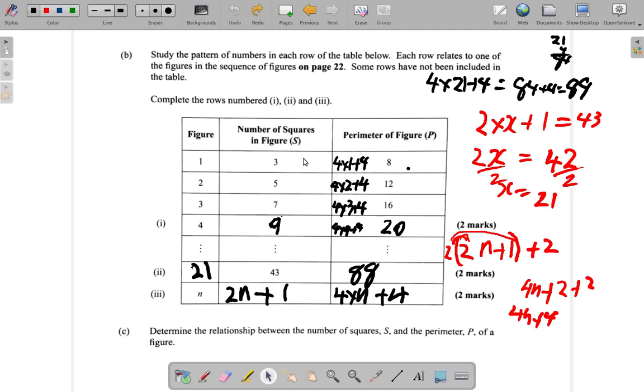Saying 2 times 3 is 6 plus 2 gives 8. 2 times 5 is 10 plus 2 gives 12. 2 times 7 is 14 plus 2 gives 16. 2 times 9 is 18 plus 2 gives 20.